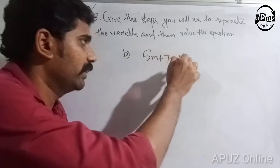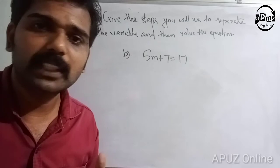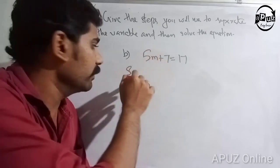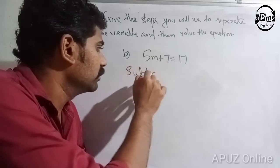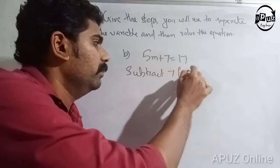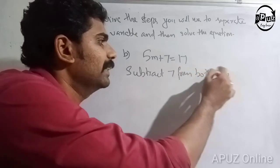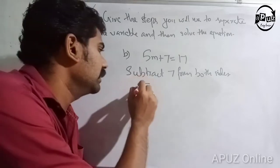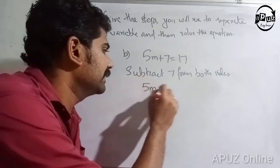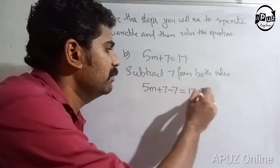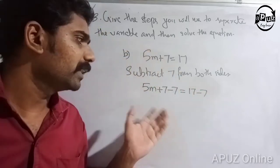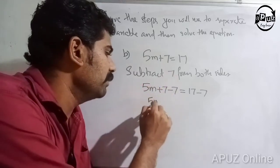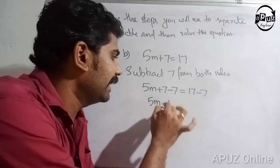Divide both sides by 3. 3 is equal to 3, so n is equal to 16. That equals 17 — correction, n is equal to 16.